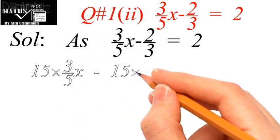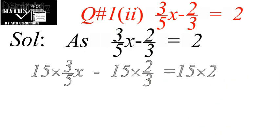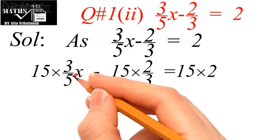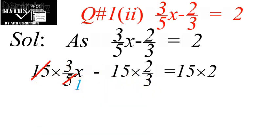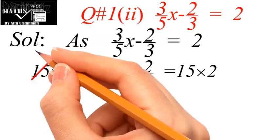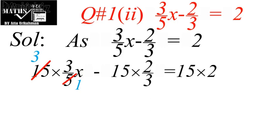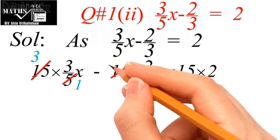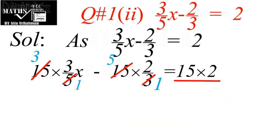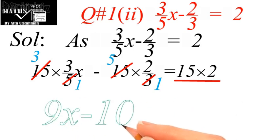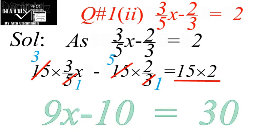So 15 times 3 upon 5 times x minus 15 times 2 upon 3 equal to 15 multiplied by 2. Now simplifying: 15 divided by 5 gives 3, so the first term becomes 9x; 15 divided by 3 gives 5, so the second term becomes 10; and on the right 15 times 2 gives 30. So the simplified form of the equation is 9x minus 10 equals 30.